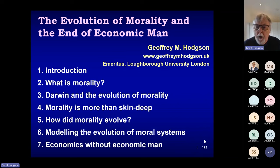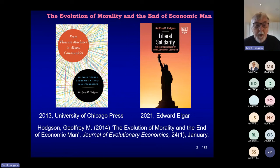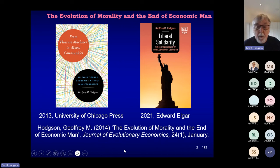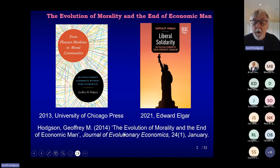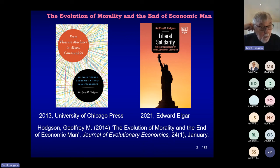This draws on three works of mine. One is the University of Chicago Press book, From Pleasure Machines to Moral Communities, published in 2013. The following year there was an article in the Journal of Evolution and Economics, 'The Evolution of Morality and the End of Economic Man' — same title. That's the piece that's got the modelling in it, so if you want to look at the modelling in particular, look at that. And more recently, a slightly broader book on political, moral, and philosophical issues called Liberal Solidarity, 2021, and I go into the issue about moral motivation in that book too.